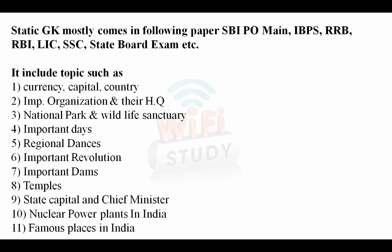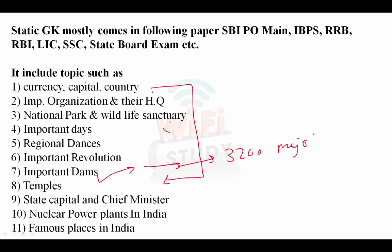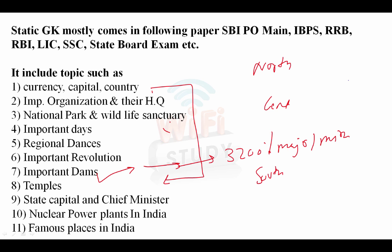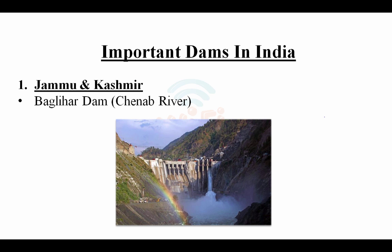Slowly and steadily we are covering all the topics, and today we present this topic in English — important dams in India. There are more than 3,200 major and minor dams, including barrages. We will start from North India, proceed to the center, then the South, and finally the Northeast region. There are only two types of questions framed from this section: the state in which the dam is located, and the river on which it is constructed.